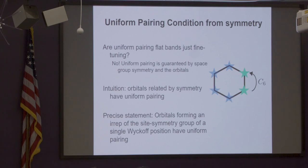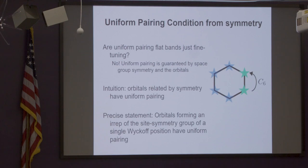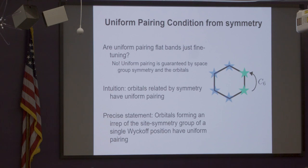I have talked so many times about the uniform pairing condition — I have to emphasize that in the beginning we thought: let's just assume it and hopefully it's true in many systems. And actually there are many systems where it's valid, because we have now shown together with Bernevig's group that it always happens if the orbitals are related by the symmetry of the system. This is true in many materials — not all, of course — so these results would apply to real materials.